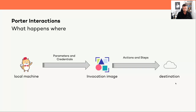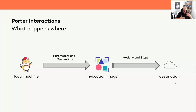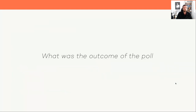From an installation perspective: at some point you hand over a CNAB bundle to the person responsible for installing. They pull the bundle, it's on their local machine, they have Porter installed, they specify parameters and credentials — their service principal ID, Azure subscription ID, and so on — and then they invoke 'porter install' providing those parameters and credentials. The Docker image is instantiated, and the invocation image takes care of the installation workflow and talks to the destination environment.